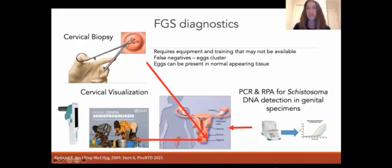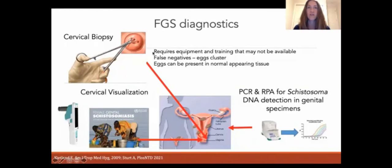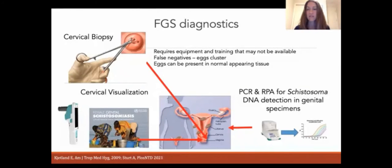FGS diagnosis is challenging in part because cervical visualization and sampling often requires speculum insertion, and in part because there is no defined reference standard. Sampling of genital tissues like cervical biopsy has been performed in some settings, but it requires equipment and training not available everywhere, eggs can cluster causing false-negative biopsies, and eggs can be present in normal-appearing tissue. Thus, commonly used surrogate techniques include standard or portable colposcopy to visualize characteristic FGS-associated lesions, or PCR or RPA for detection of schistosoma DNA in genital specimens.